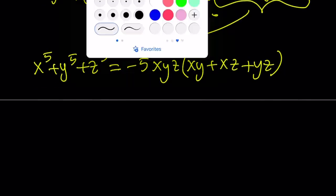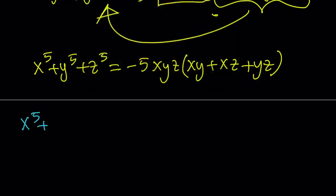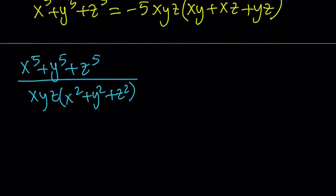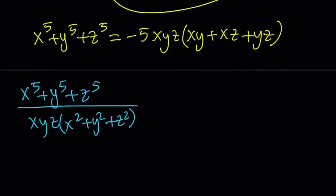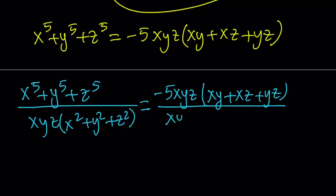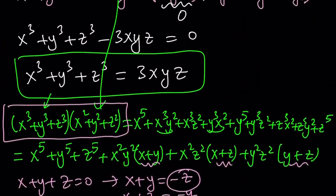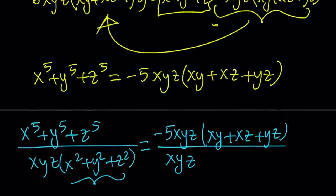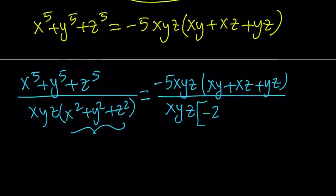Our original problem was x to the fifth plus y to the fifth plus z to the fifth divided by xyz multiplied by x squared plus y squared plus z squared. Now we have everything we need. Let's replace the numerator with negative 5 xyz times xy plus xz plus yz. The denominator keeps xyz, which will cancel. And x squared plus y squared plus z squared can be written as negative 2 times xy plus xz plus yz.